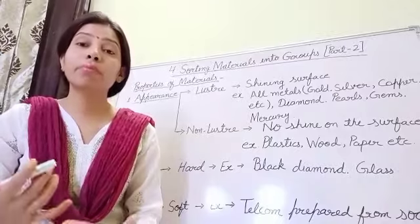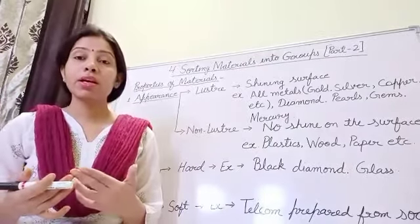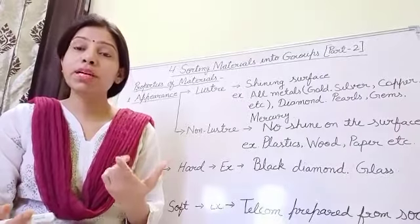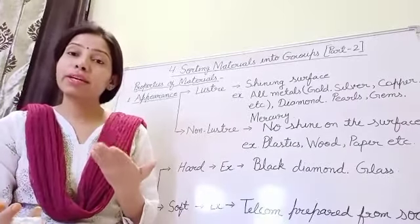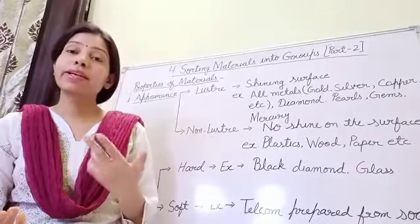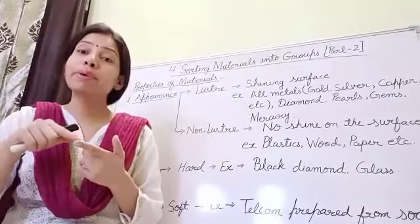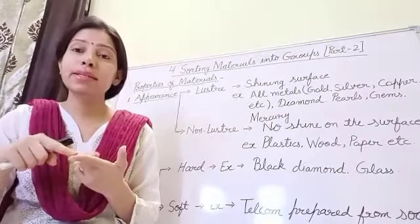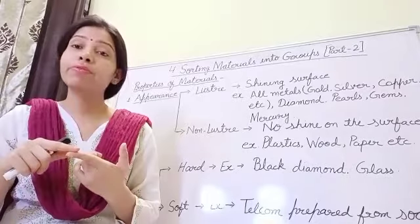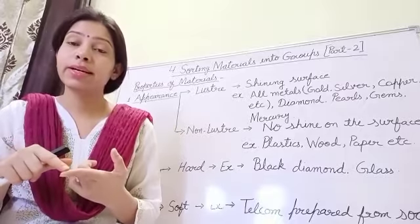The next property is hardness of material. Let's take an example: if we take a piece of foam — the kind filled in mattresses and pillows — and a piece of wood, and we press the foam, it can be easily pressed. But when we press the wood, we won't be able to press it, because wood is hard.